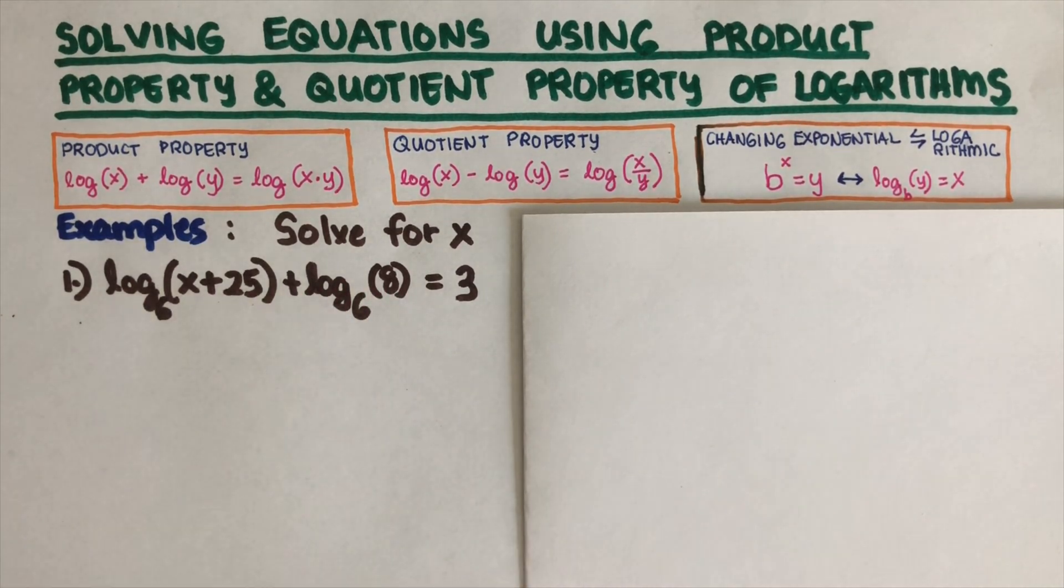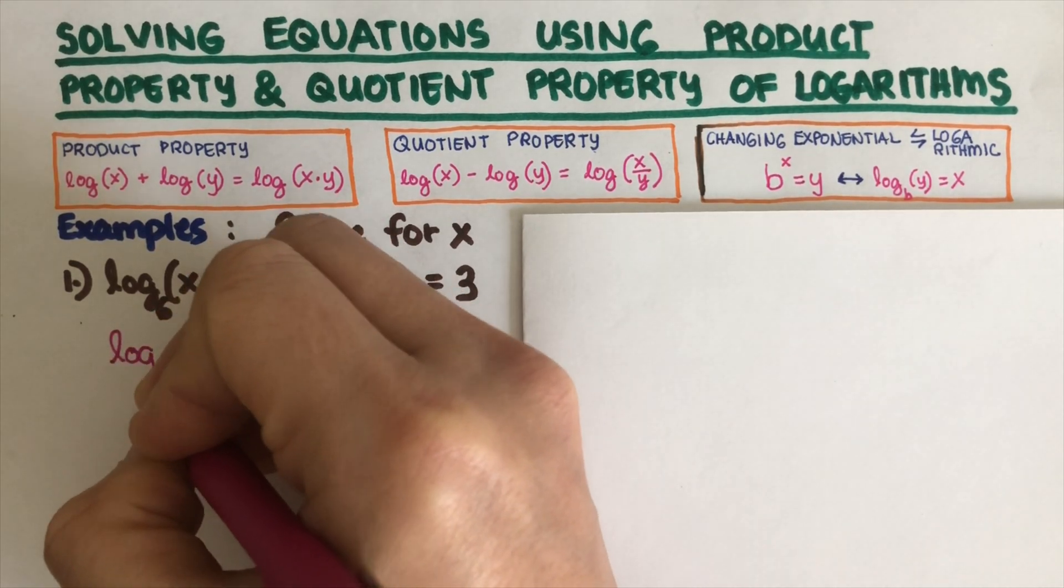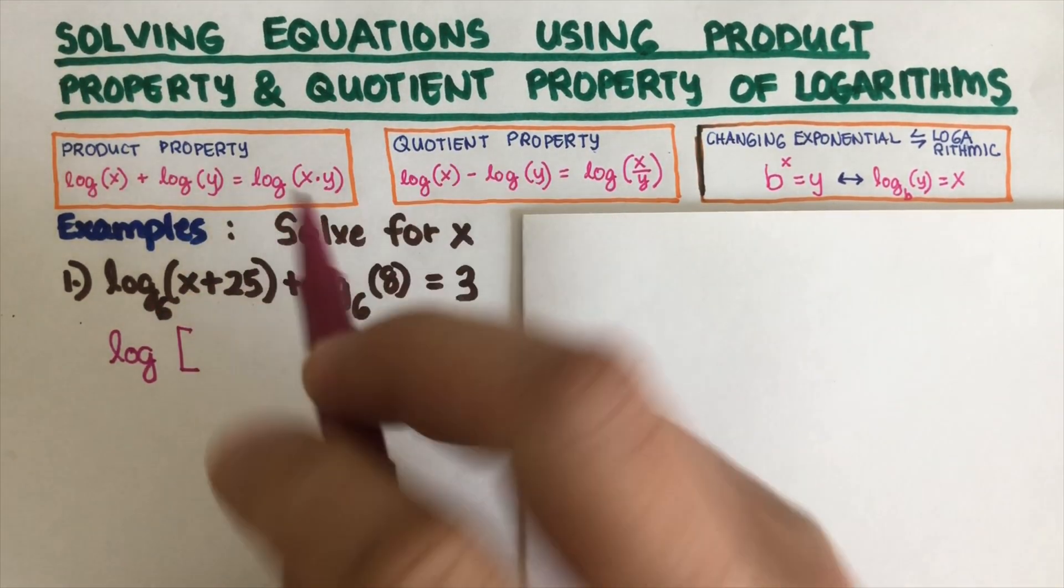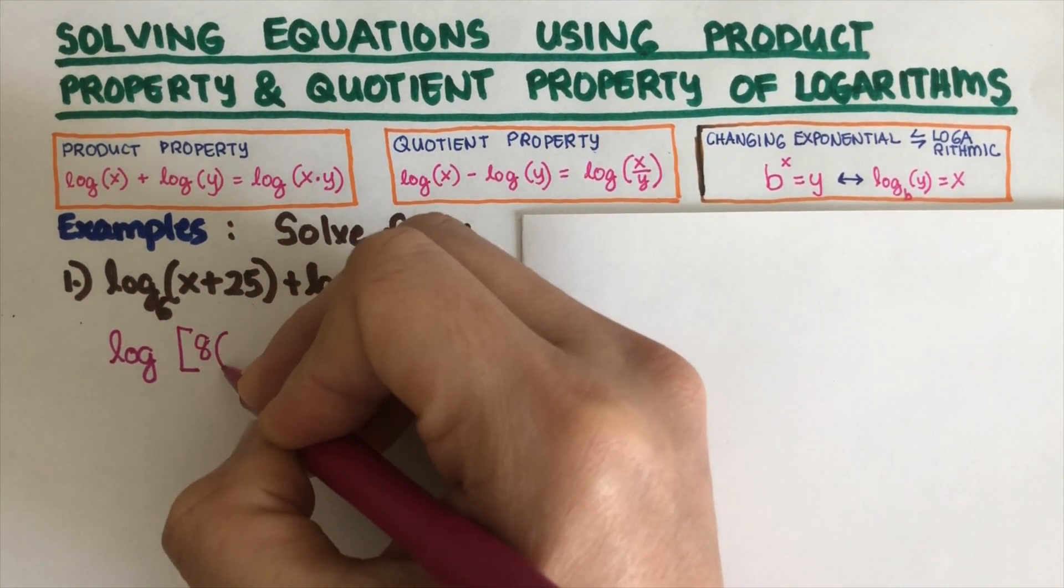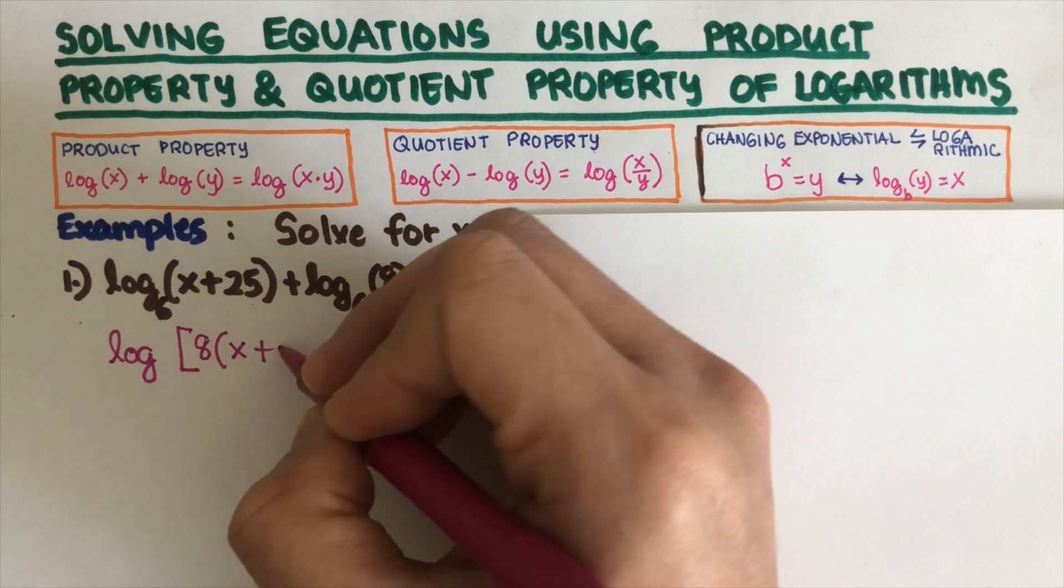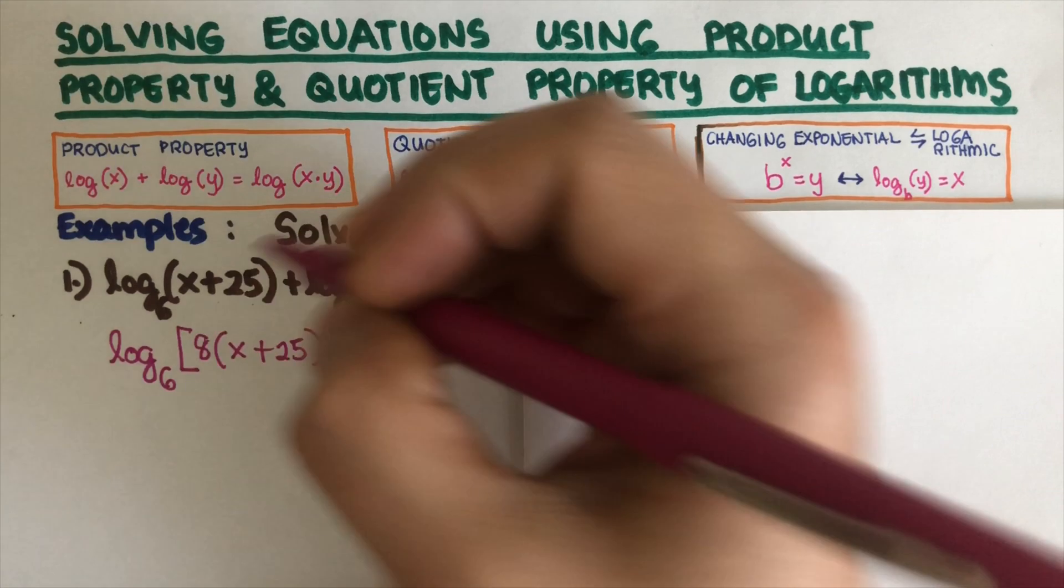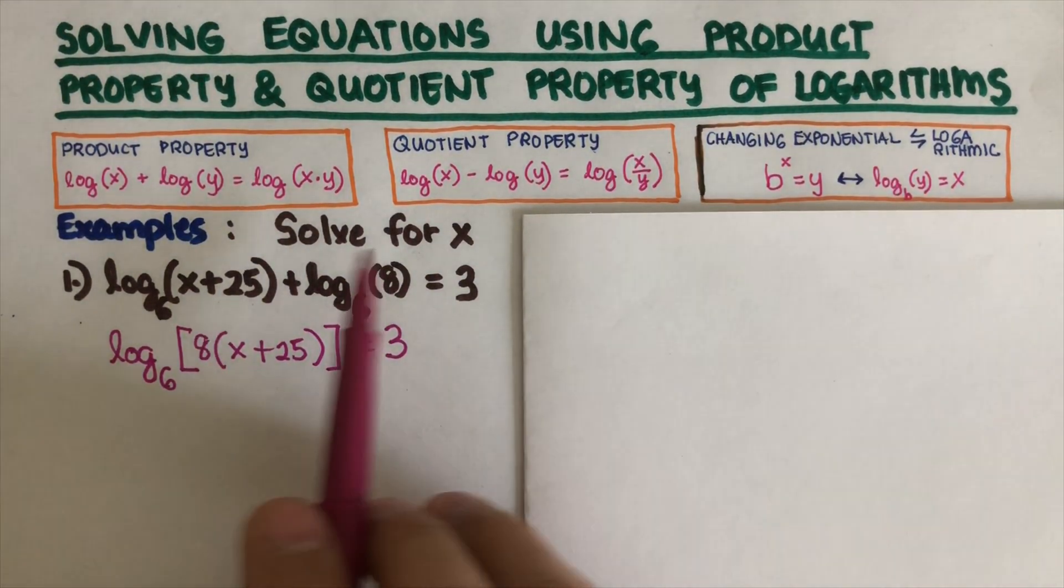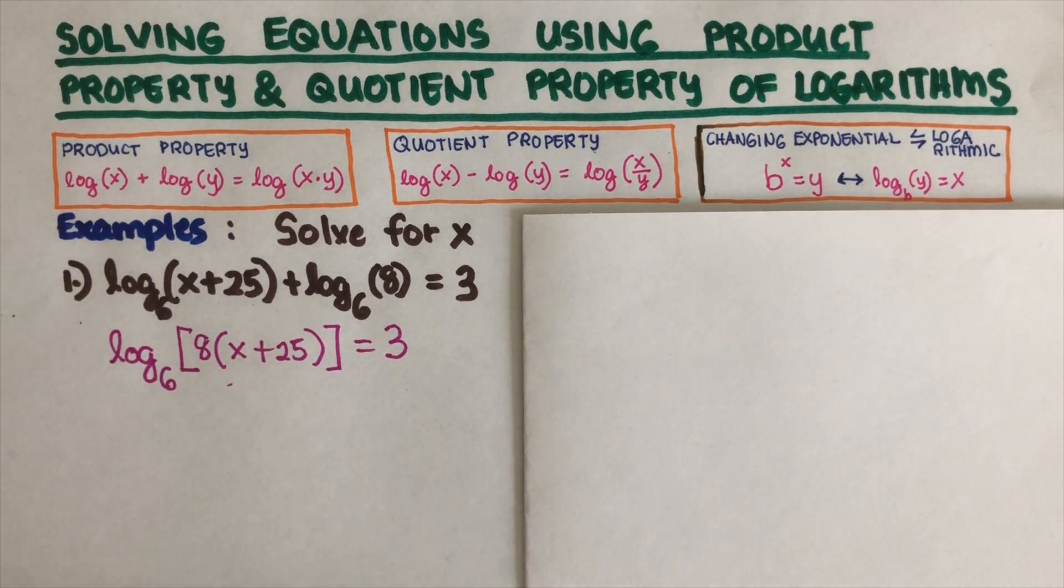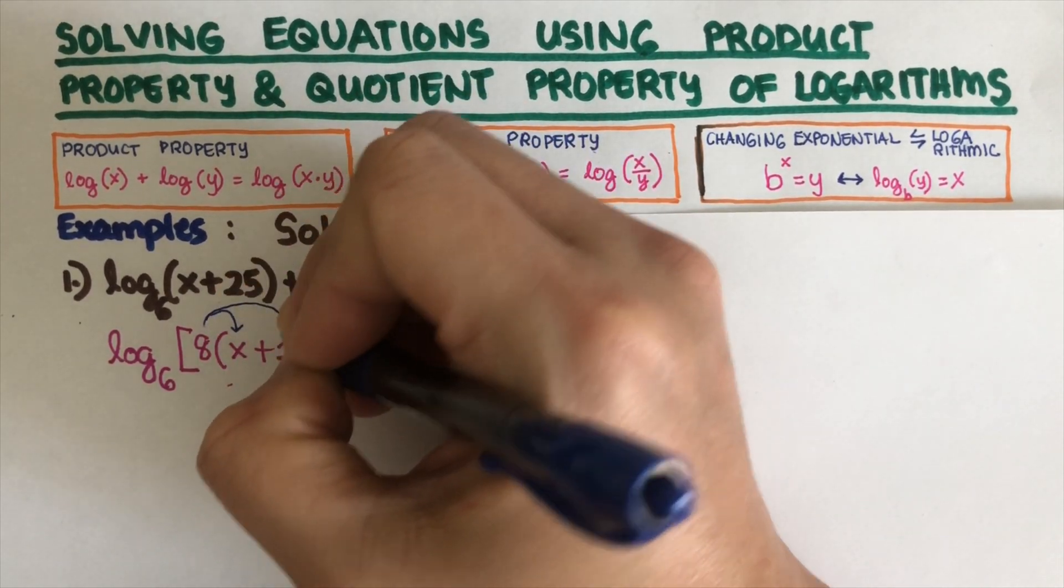So we're going to multiply these two numbers here. This would come out to be log of, that's going to be multiplying these two numbers right here, so that would be 8 times (x + 25), and then that is to the base 6 equals 3. I multiply these two because you have x and y; x and y will be multiplied together.